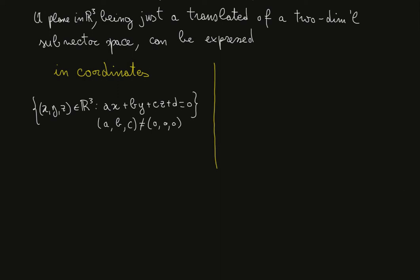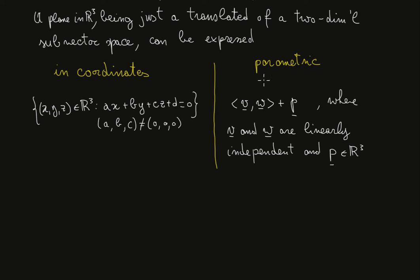The other way to describe a plane is the parametric form. So vector space generated by v and w plus a fixed vector p, where v and w are linearly independent, so they are a basis for a two-dimensional subvector space. And p is a fixed vector in R³. This two-dimensional subvector space we will call the homogeneous component of the plane.